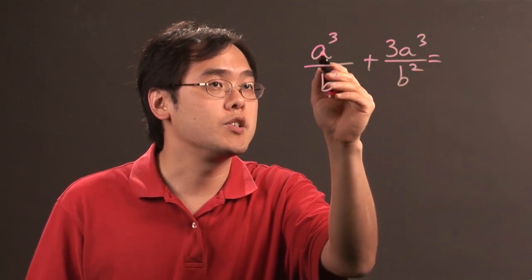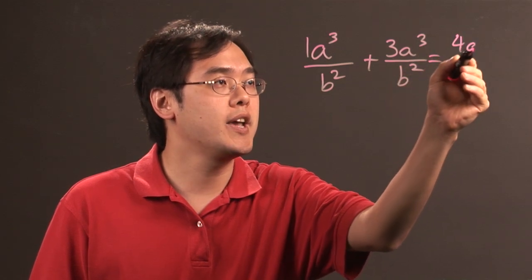Now here what you can consider is you have 1a cubed plus 3a cubed is going to be 4a cubed, and then b squareds match so you want to keep the denominator.